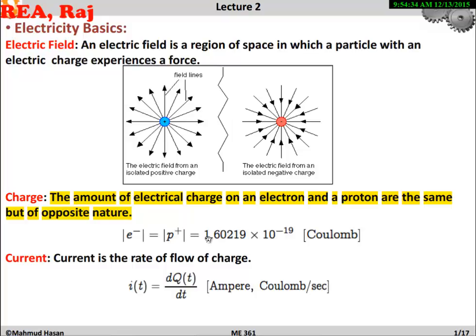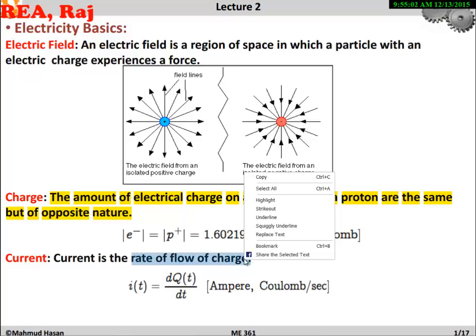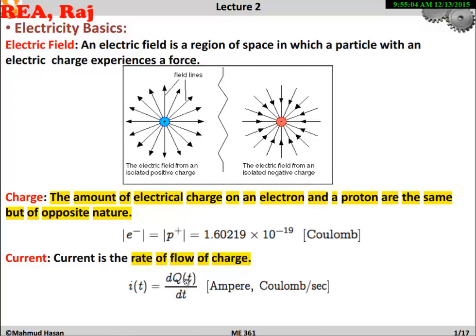Current is the rate of flow of charge. So to draw a current, we can write the rate of flow of charge. If charge progresses, we denote it by q. If you differentiate with respect to time, the rate, that is d by dt, is the flow of charge q(t). That q is charge.